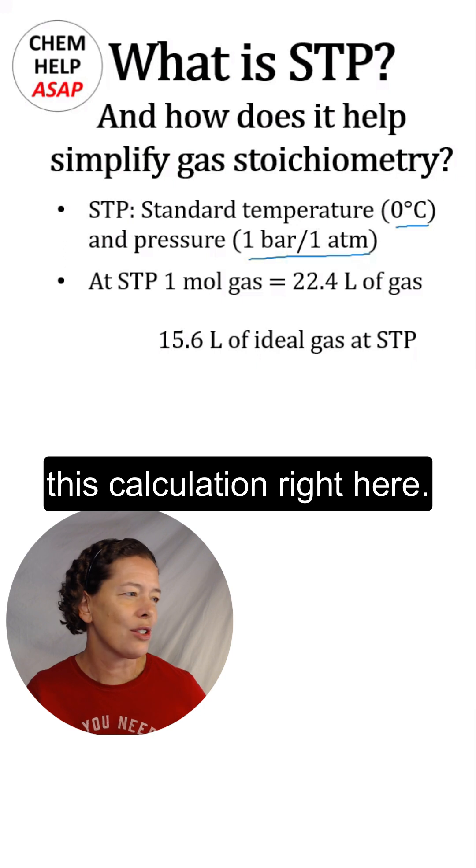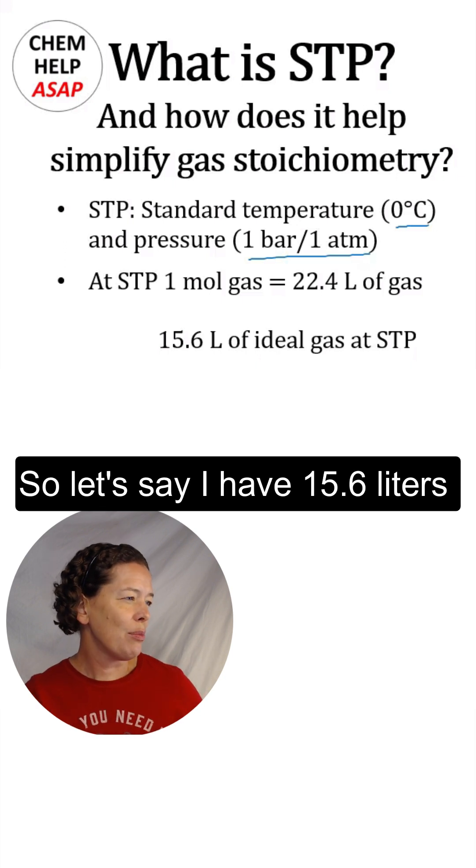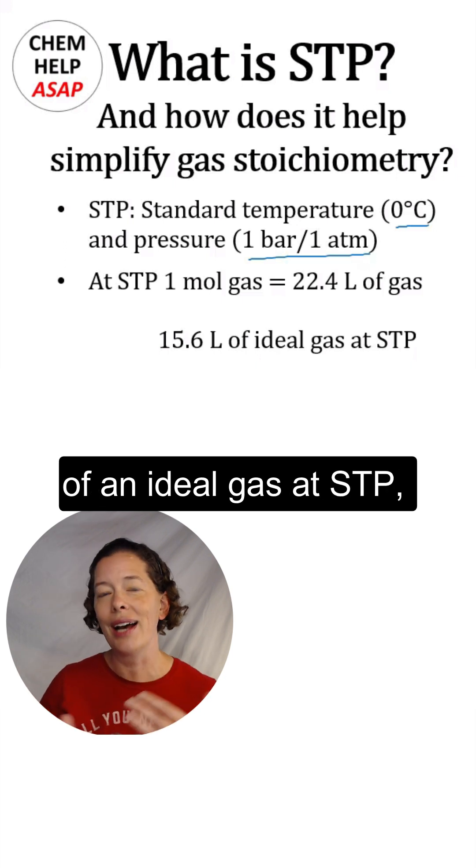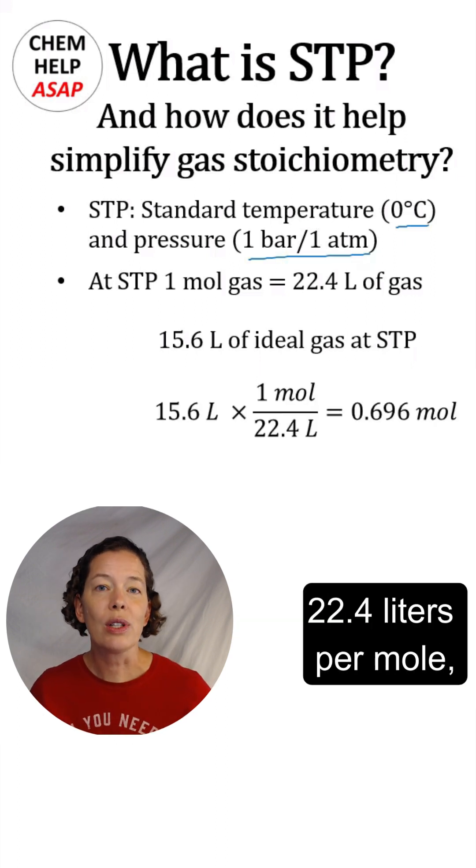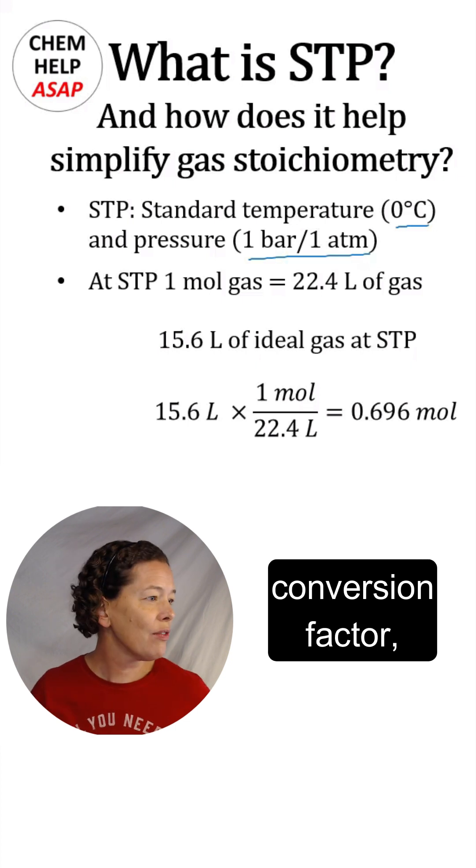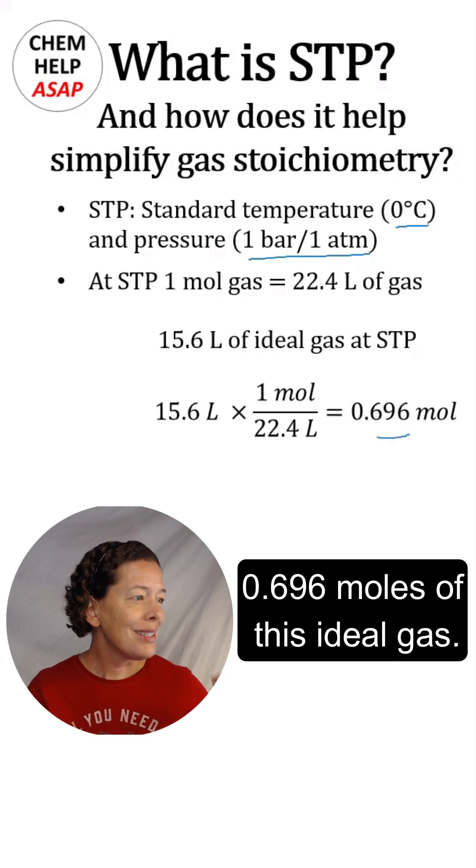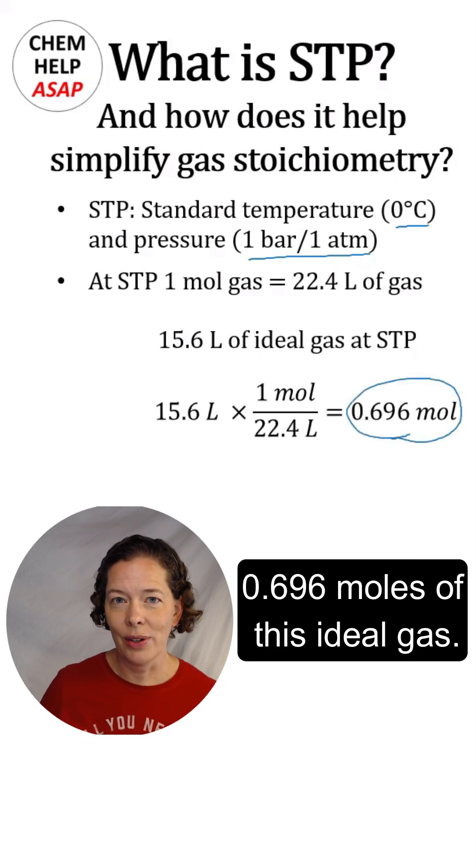Let's take a look at this calculation. Say I have 15.6 liters of an ideal gas at STP and I want to know how many moles I have. If I know I've got 22.4 liters per mole, I use that as my conversion factor and that gives me 0.696 moles of this ideal gas.